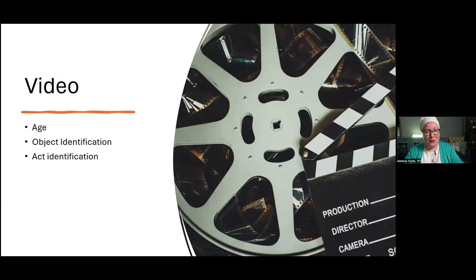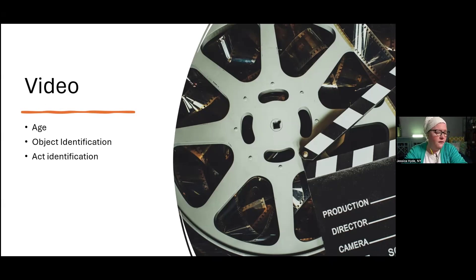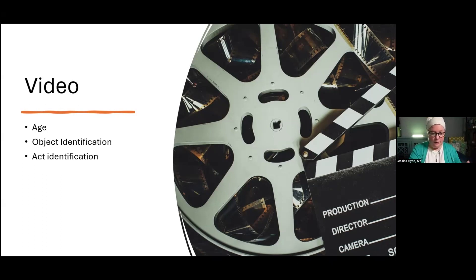Moving past pictures into video, AI has been in use for several years, and some really important characteristics have to do with identification of acts. Sometimes nefarious actors take illicit content and embed that video inside normal video. I've worked cases where people took nature videos — tigers and lions from Animal Planet or National Geographic — and put illicit videos inside those. The goal was that an examiner starting to look would say this is not responsive, but if you looked further in, it would be there.